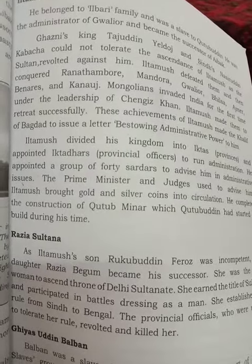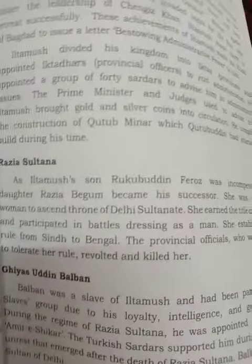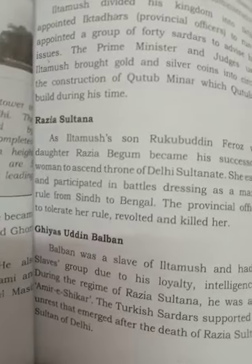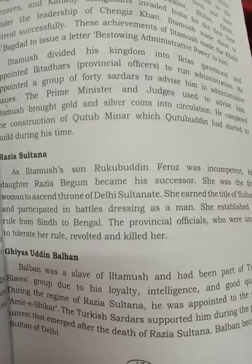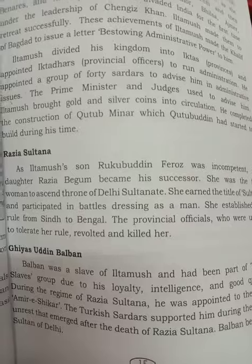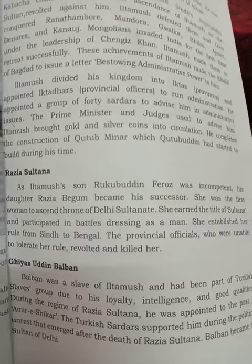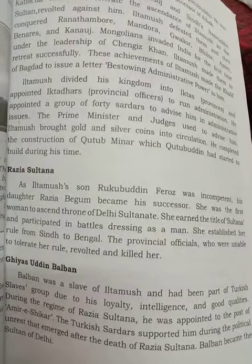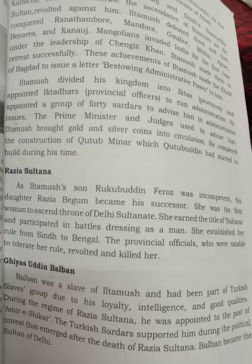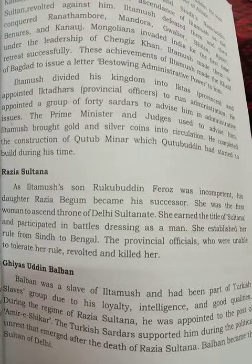The fourth ruler is Ghiyasuddin Balban. Balban was a slave of Iltutmish. He destroyed the Chahalgani and called himself Zil-i-Ilahi, meaning Shadow of God, and Naib Amir-ul-Momin, meaning Right Hand of the Khalifa. He followed a policy of blood and iron.